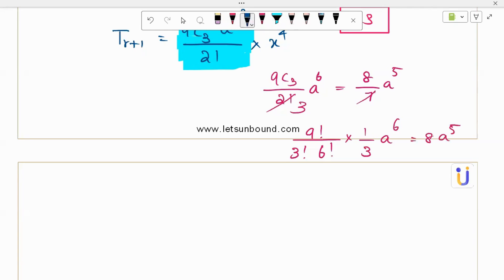If it's a calculator paper also, we need to be able to solve. So 9 into 8 into 7. And then 6 factorial will get cancelled by 3 times 2 and one more 2. a power 6 equal 8a power 5.